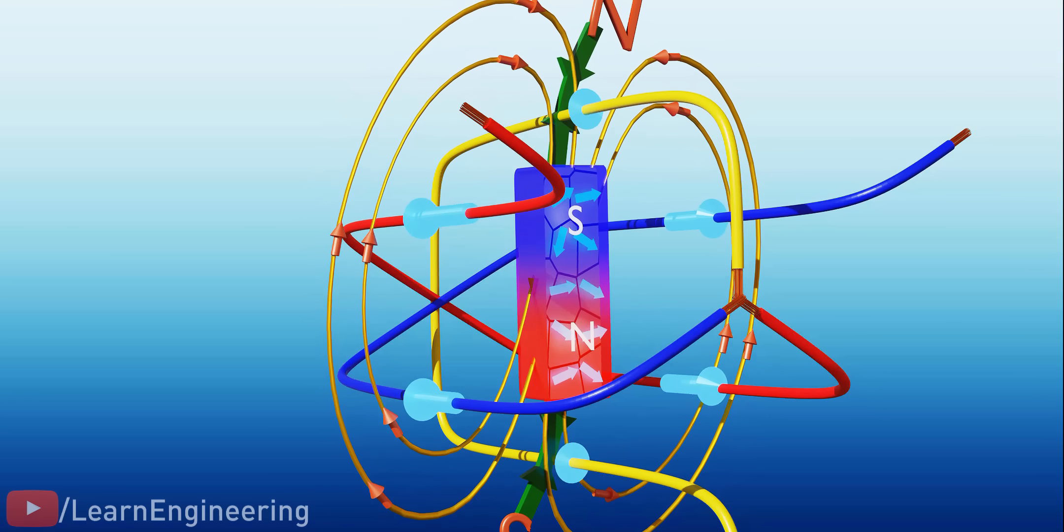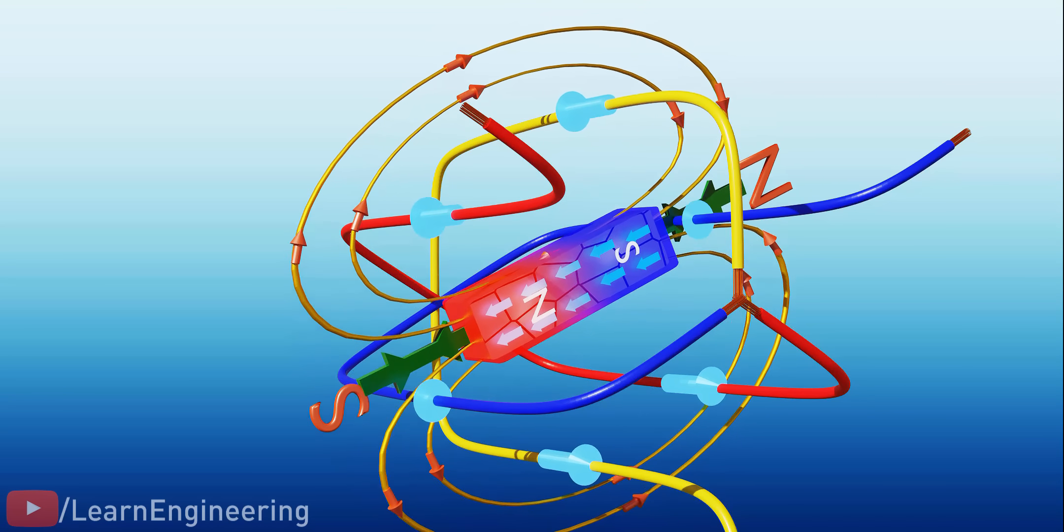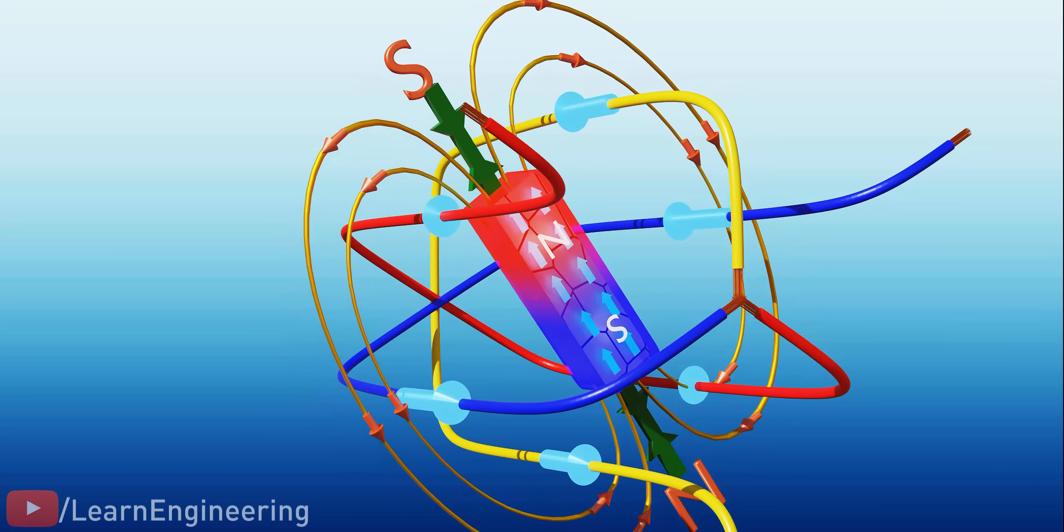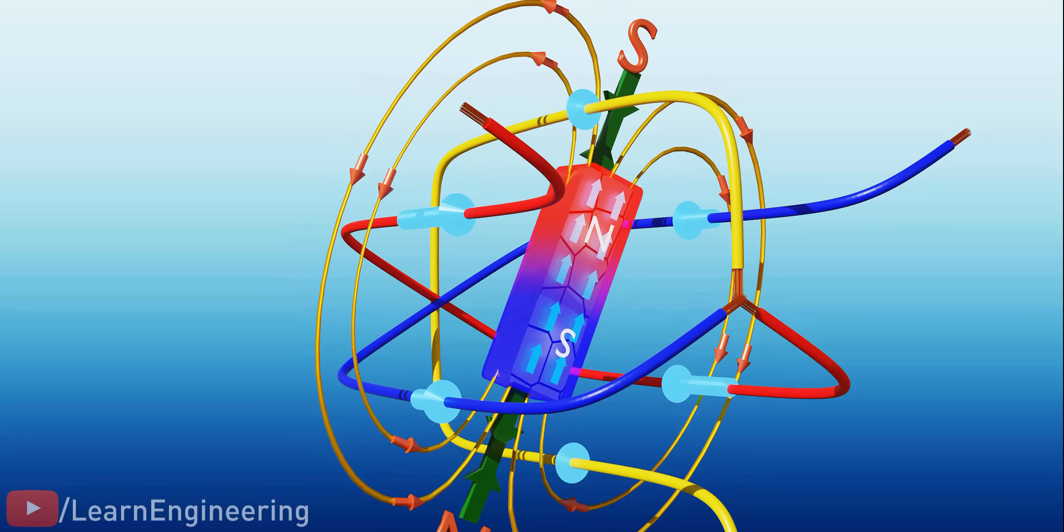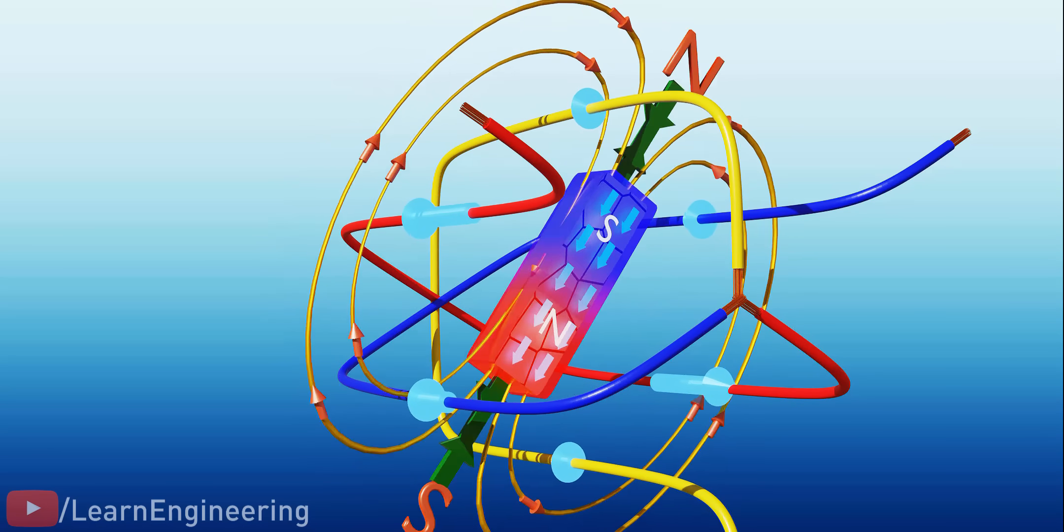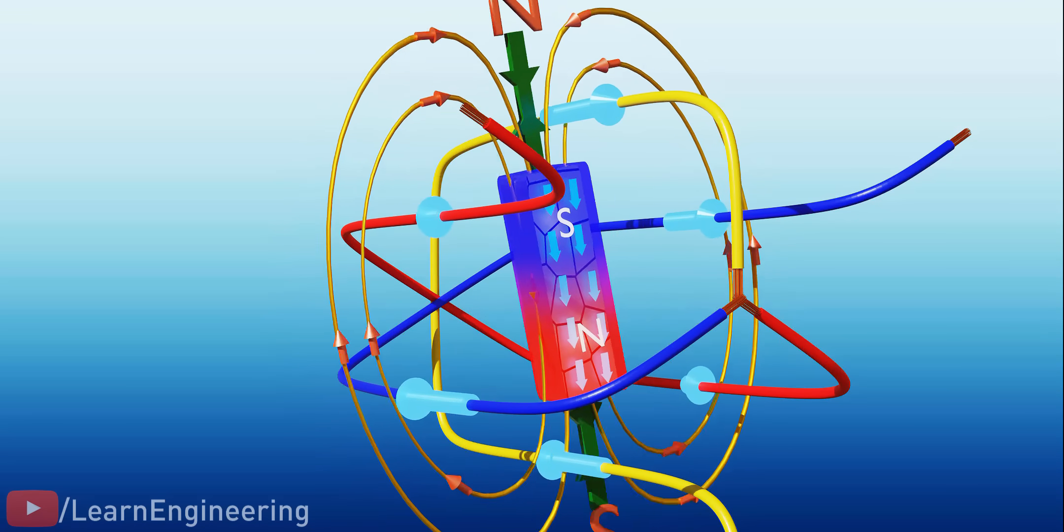The controller device detects the position of the rotor. Depending upon this position, the controller adjusts the RMF speed so that there will always be an attractive force between the rotor and the RMF. As the rotor speeds up, the controller increases the RMF speed as well. Thus, the rotor runs in synchronism.